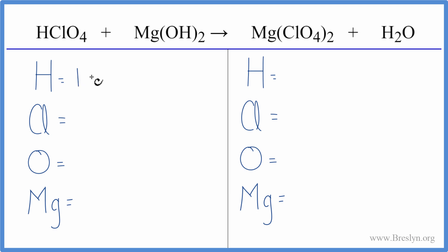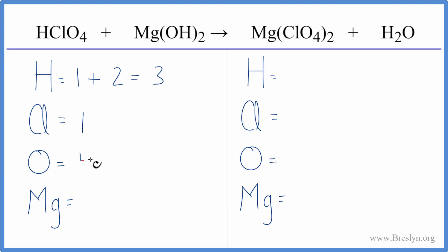On the reactant side, we have one hydrogen, plus two times the one here in magnesium hydroxide, so two more hydrogens — that gives us three. One chlorine. For oxygens, we have four here, plus this two applies to everything in the parentheses: two times one is two. So we have six oxygens, and then one magnesium.